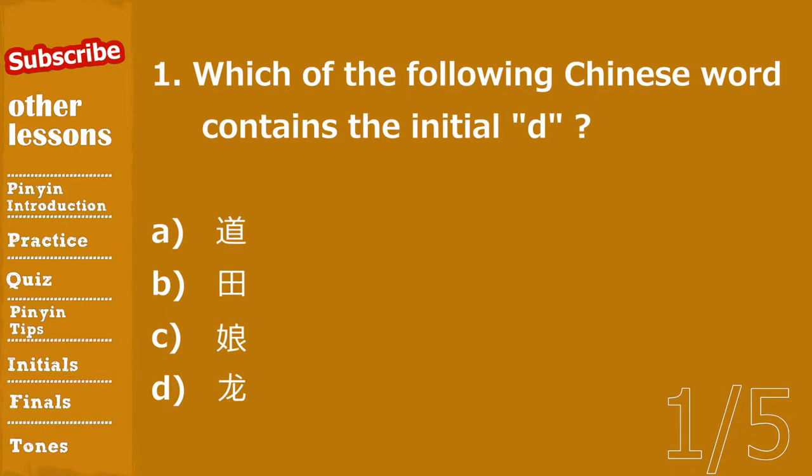Question number one. 第一题. Which of the following Chinese words contains the initial 'd'? A. 到, B. 甜, C. 娘, D. 龙.